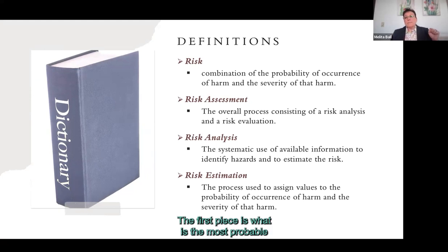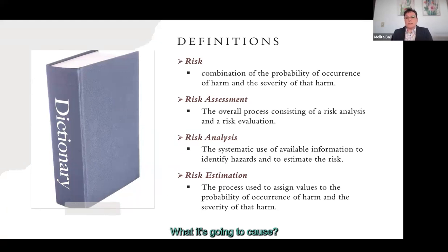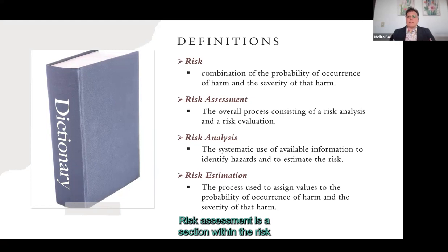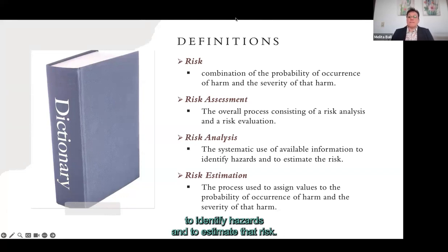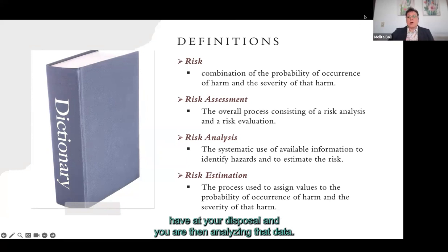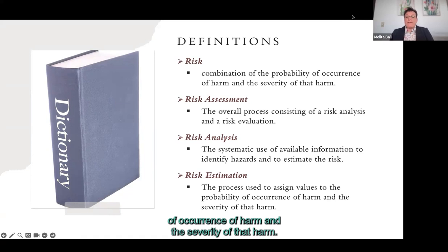There are two key litmus tests: what is the most probable area of occurrence for a particular harm, and if it were to occur, what will the severity be — will it be a minor injury, death, or anything in between? Risk assessment covers two things: risk analysis, which is the systematic use of available information to identify hazards and estimate risk; and risk estimation, which is the process of assigning values for probability of occurrence and severity of harm.